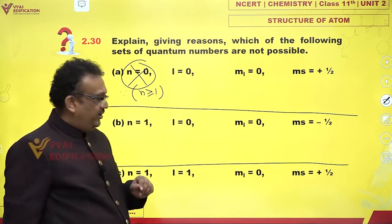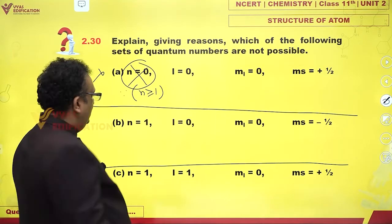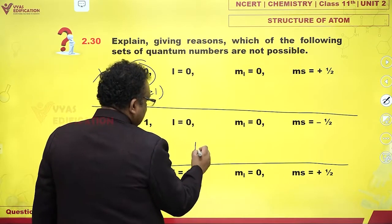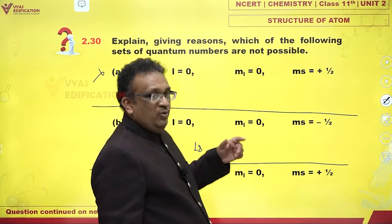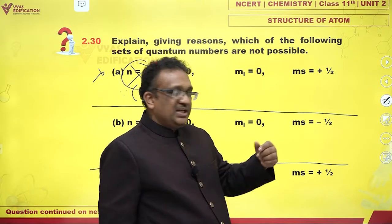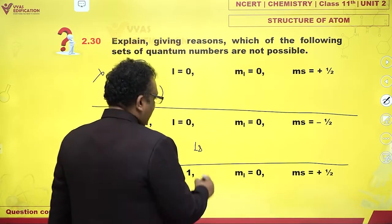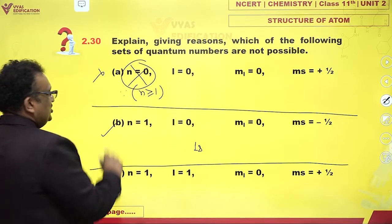n equals 1, l equals 0. Yes, it is 1s. ml can have only one value which is 0. Yes. And ms can be plus half or minus half. It is minus half. Is it possible? Yes, it is possible. No problem.